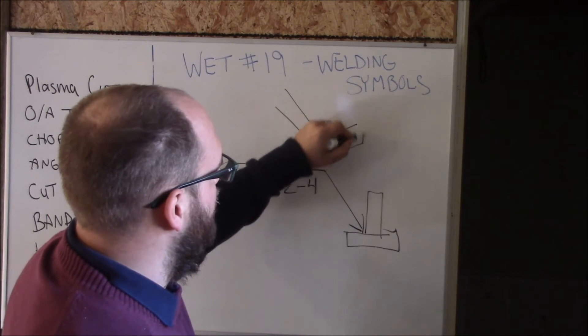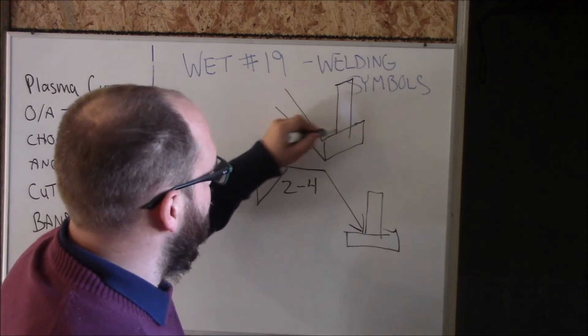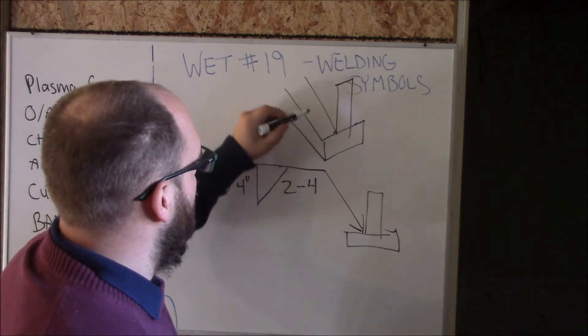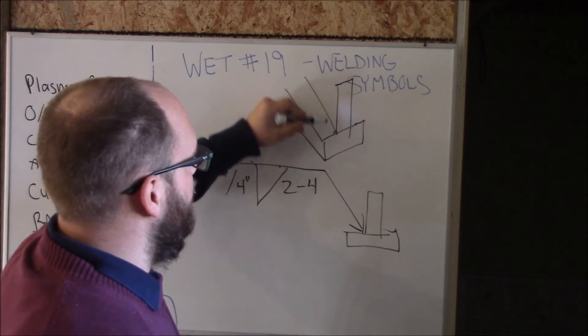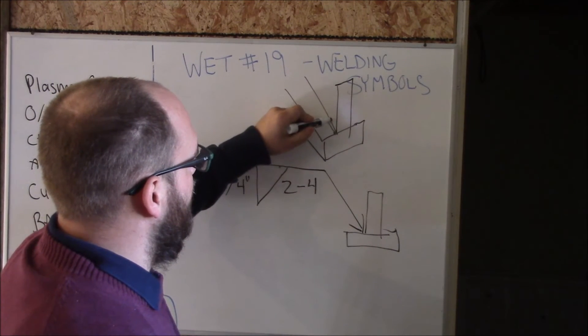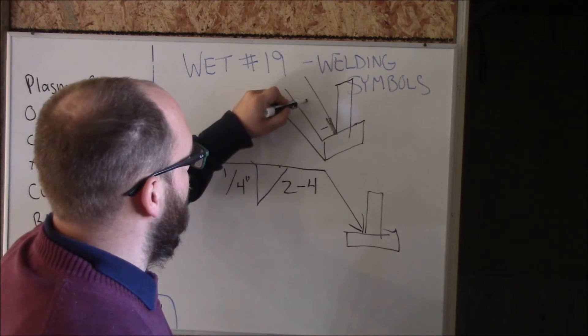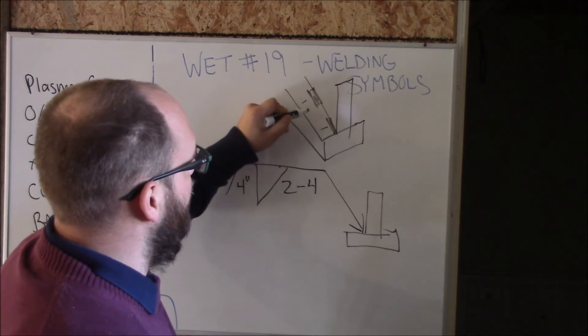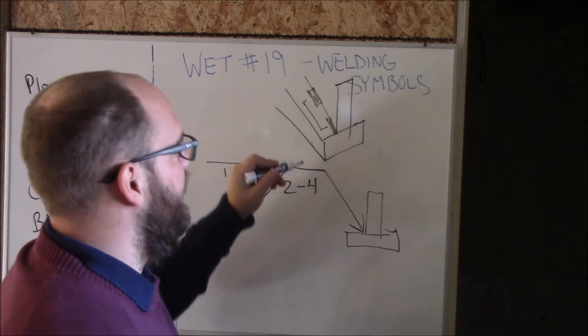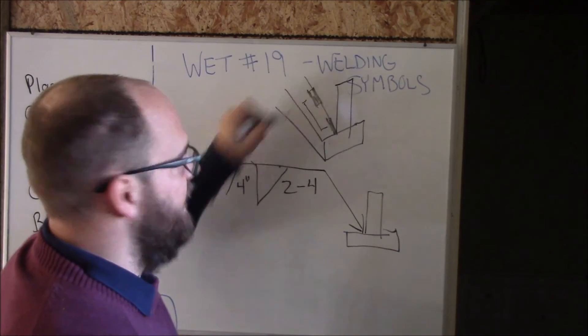A weld that looks like - forgive this horrible drawing here - your weld's going to be like two inches, and then between center of each weld, this will be your four inches. And that's your pitch. So two inches long and four inches on center compared to each other.